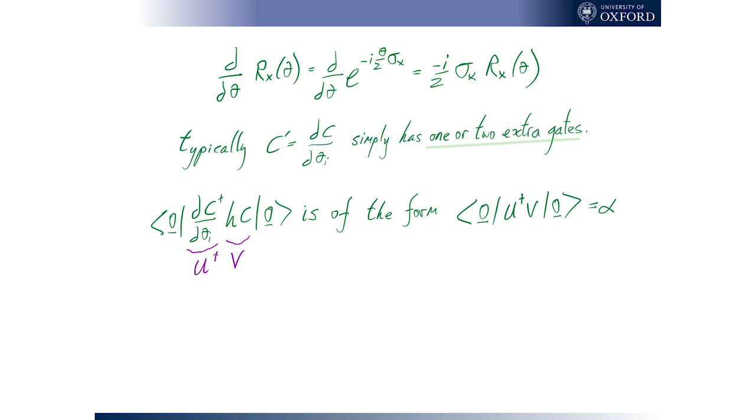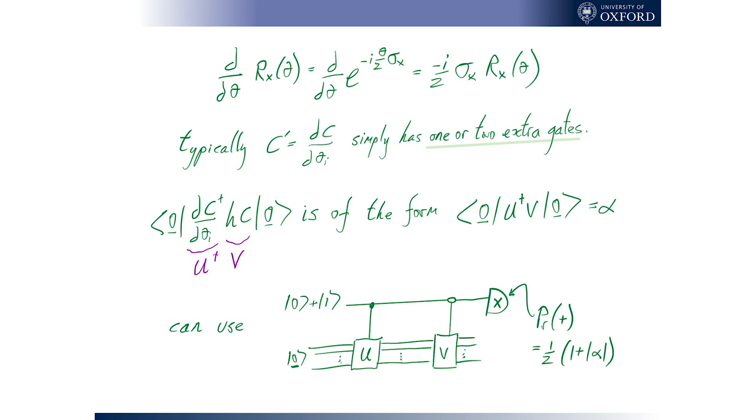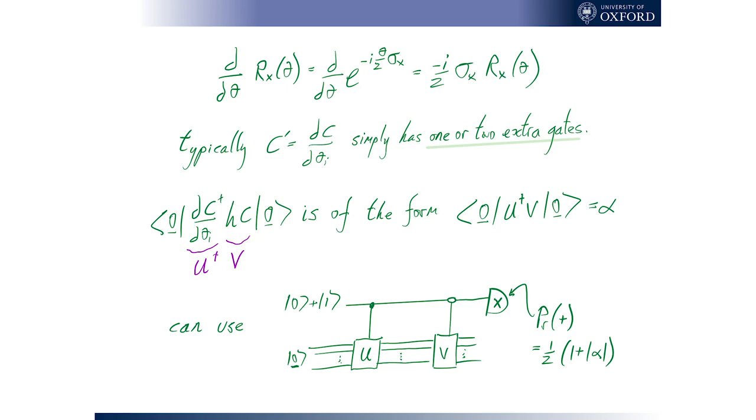It still looks like a thing that might be a heck of a thing to evaluate experimentally. But it's of the form of just two operators. And we can make use of a trick that's been known in the field since at least 2002, which is an Eckert paper, where we essentially take a probe qubit, we introduce one more qubit, and put it in a zero plus one. And then we have a controlled u, controlled by zero, and a controlled v, controlled by one, so that we're entangling this probe state with the main register.